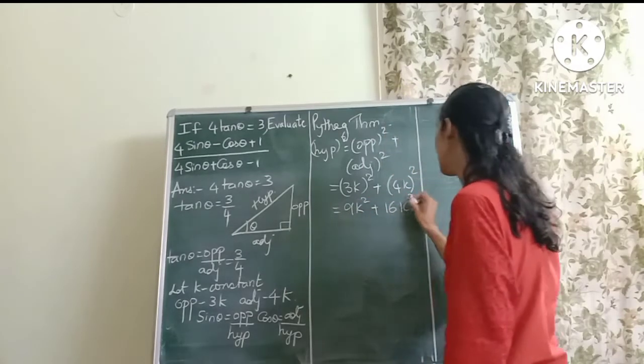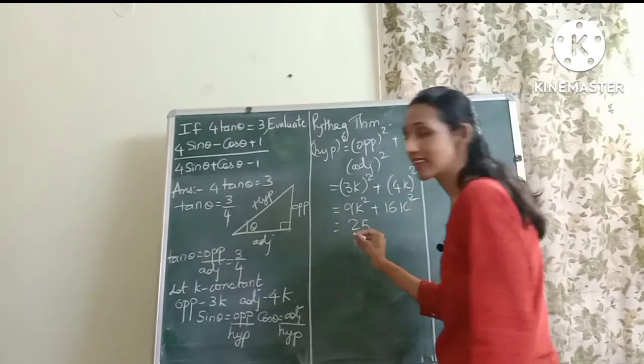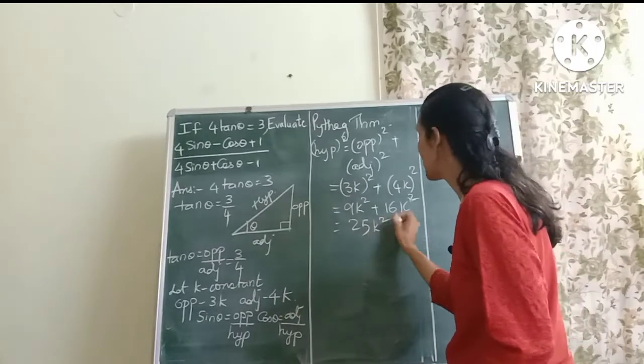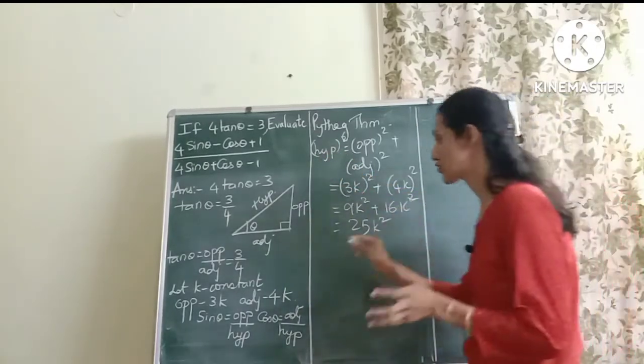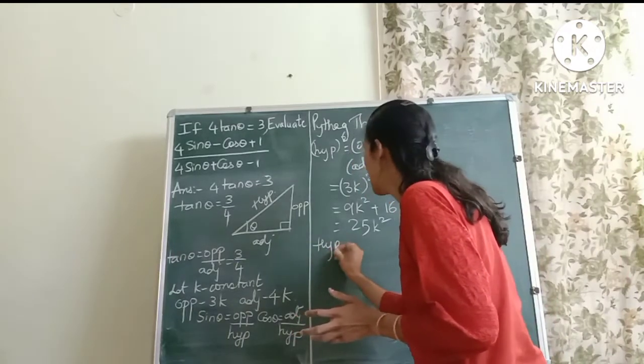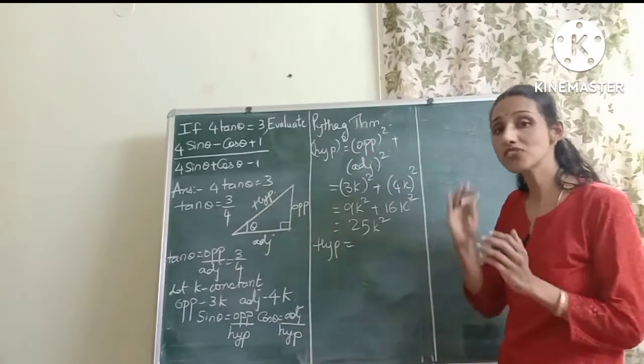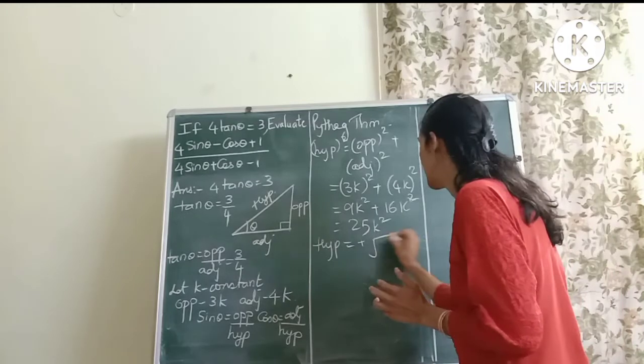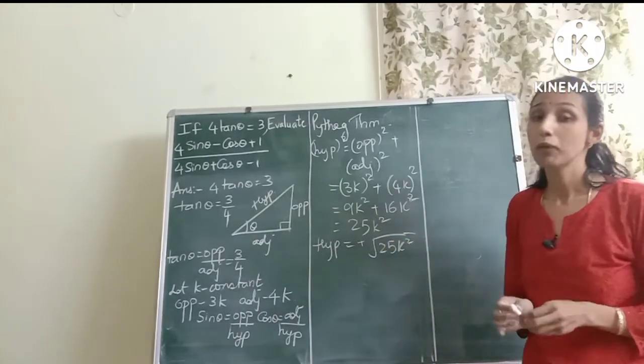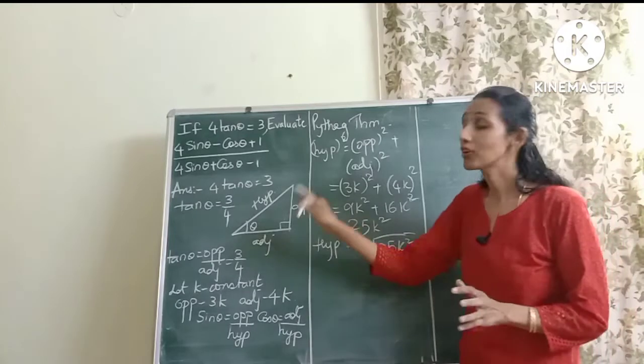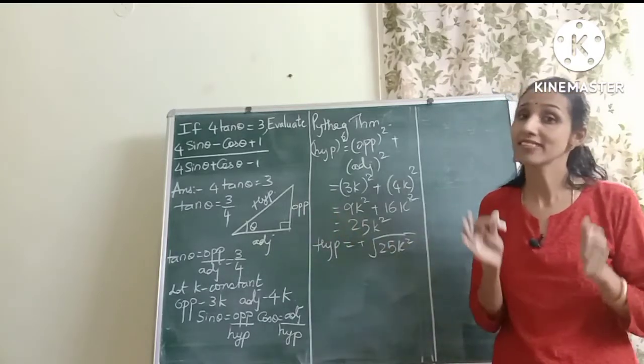So when I open up the bracket I will get 9k² plus 16k² and what will this be? Yes, it will be 25k². Now this is my hypotenuse square, not my hypotenuse. So what will be the hypotenuse? Yes, it will be the positive square root of 25k². Now why did I say positive? Positive because we are talking about side of a triangle, friends, and side can never be negative.